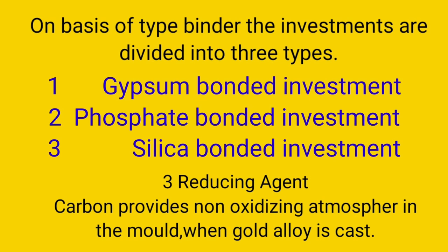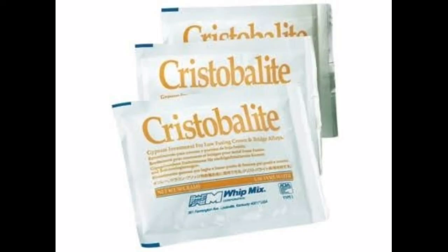On the basis of the type of binder, investments are divided into three types: 1. Gypsum-bonded investment, 2. Phosphate-bonded investment, and 3. Silica-bonded investment. Reducing agents: Carbon provides a non-oxidizing atmosphere in the mold when gold alloy is cast.